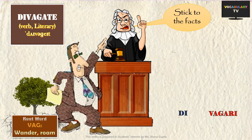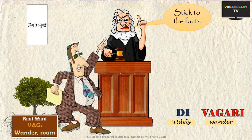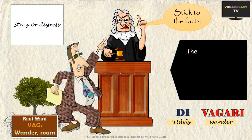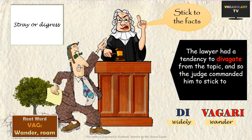Next, we have the word 'divagate,' made up of the prefix 'di-' meaning widely, and 'vagary' meaning wander. So 'divagate' means to stray or digress, and this word is mostly used in a literary sense. An example: 'The lawyer had a tendency to divagate from the topic, and so the judge commanded him to stick to the facts of the case.'